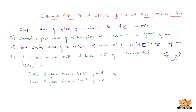The next one is about the spherical shell. If capital R and smaller r are the outer and the inner radii of a hemispherical shell respectively, then the outer surface area is 4 pi R square square units, and the inner surface area would be 4 pi r square square units.